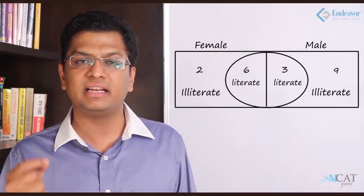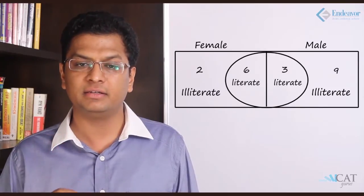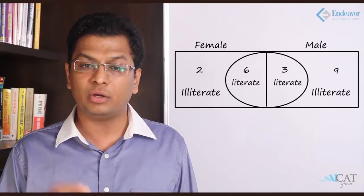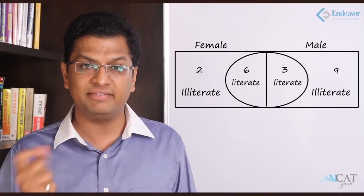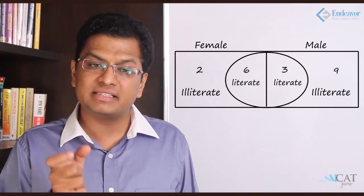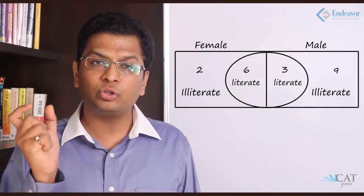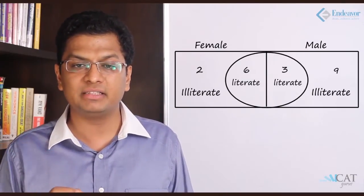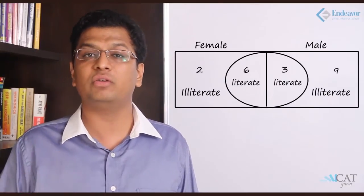In a group of 20 adults there are 8 females, 9 literates, and 6 female literates. Find the number of male illiterates. There are 9 literates out of 20, so 11 are illiterates. Out of 8 females, 6 are literates, so 2 females are illiterates. Of the total 11 illiterates, 2 are female, so 9 are male illiterates.